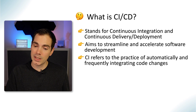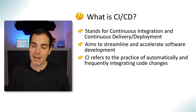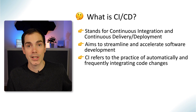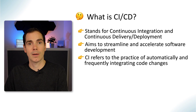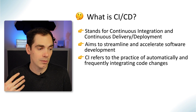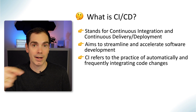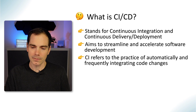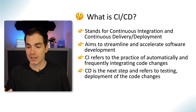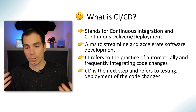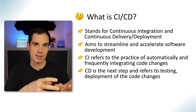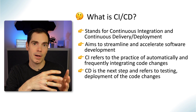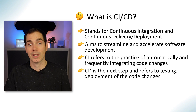CI refers to the practice of automatically and frequently integrating code changes — that's the continuous integration. So in case a developer codes something, they do some local testing and merging to the repository, and then some processes are going to trigger. CD is the next step and refers to testing and deployment of code changes — something needs to be delivered.